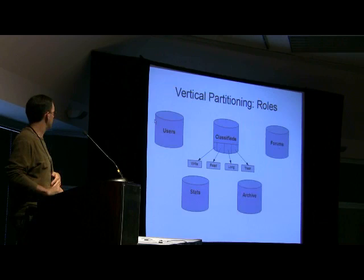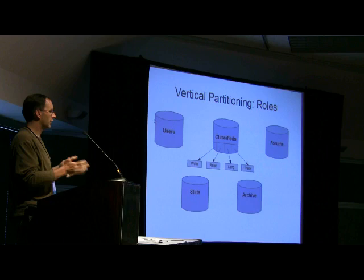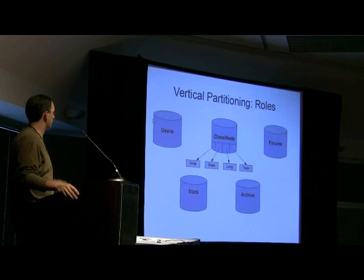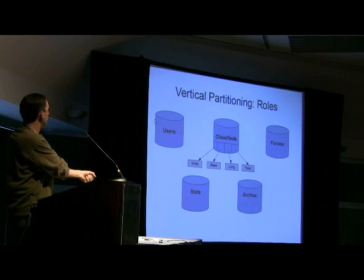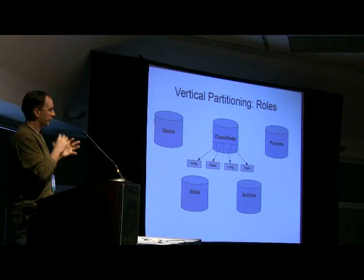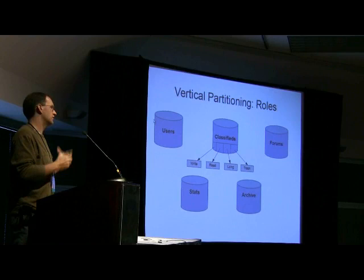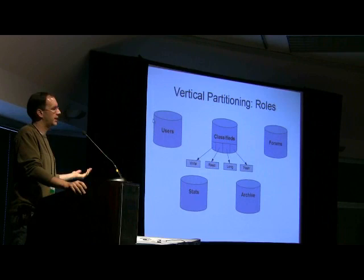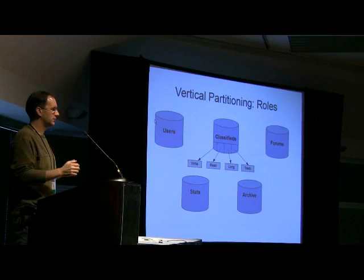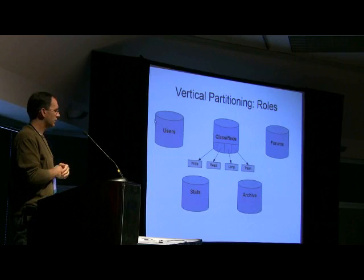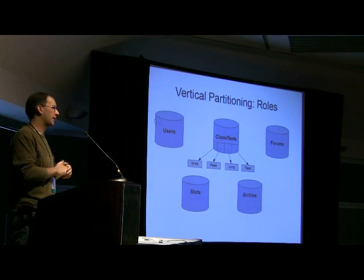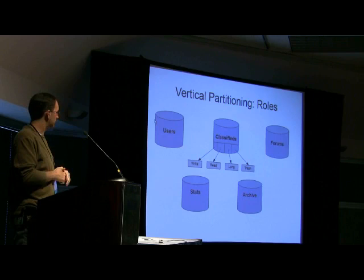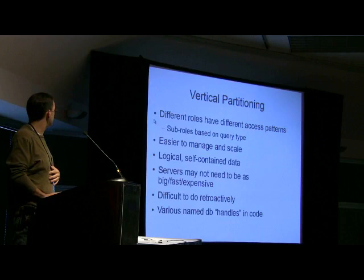One thing we're good at is vertical partitioning — we've got different clusters for different tasks. Our user database is completely separate from our classified database, which is completely separate from our forums database. Within those clusters, we tend to separate subgroups of slaves off for various tasks. Usually one master for writes, and on the read side we have different database handles we can acquire based on the sort of read we want to do — fast primary key lookups, longer scans, or full table scans each get a different handle.